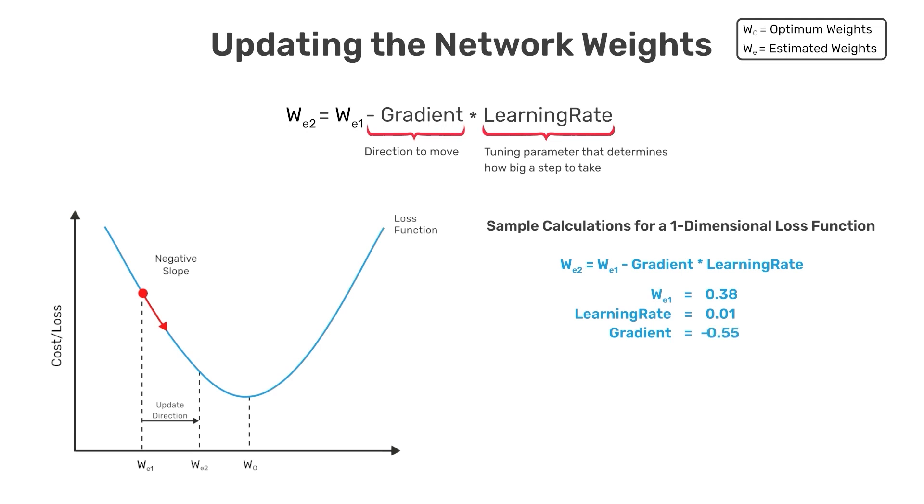So using the update equation above, we can easily compute a new estimate for the weight, which we'll refer to as W_E2, which is 0.3855. This calculation was simplified because we're only working in a single dimension, but this is easily extended to multiple dimensions.